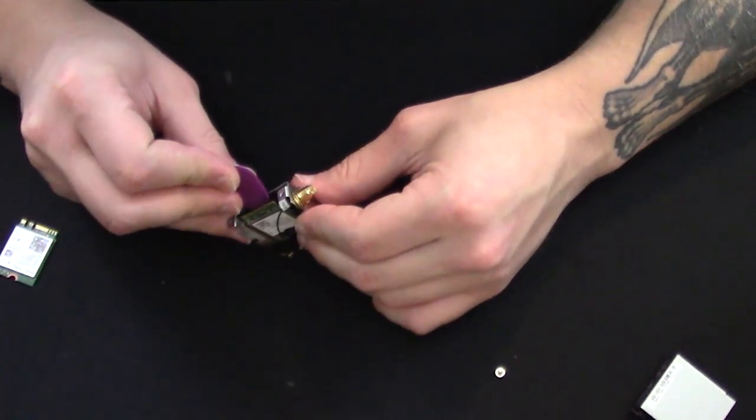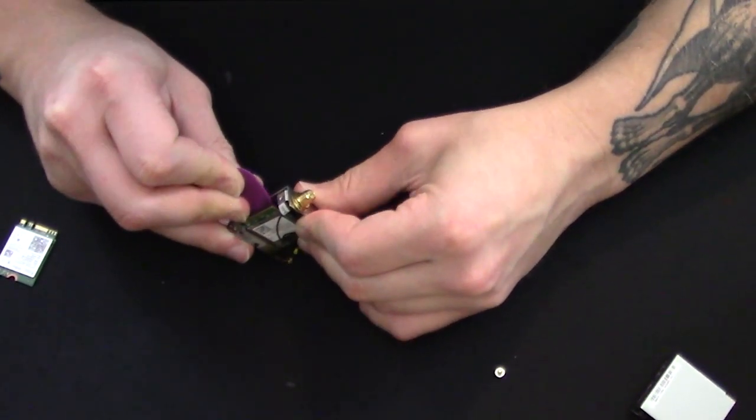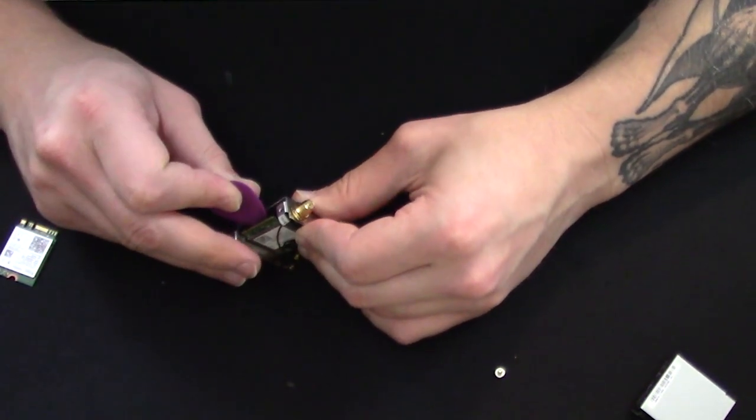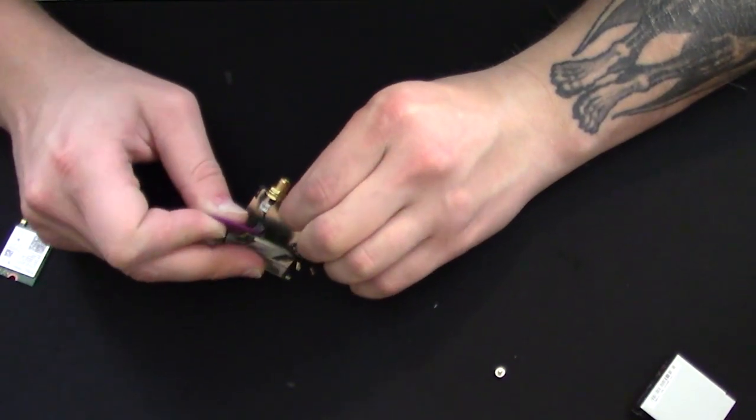Use your spudger or guitar pick again to peel the PCB away from the adhesive holding it in. You can remove the PCB from the housing.